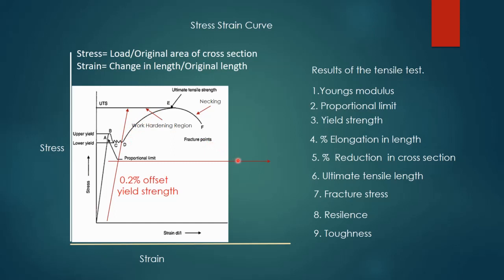The percentage elongation to the fracture point is the total elongation, while the elongation up to the maximum point is the uniform elongation. The percentage reduction in area is defined as the decrease in cross-sectional area at the neck at fracture divided by the initial area. Both percentage elongation and percentage reduction in area measure ductility.